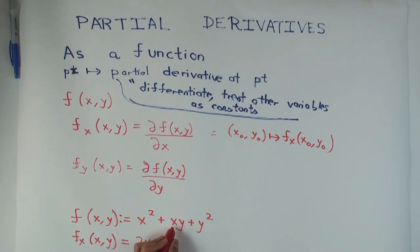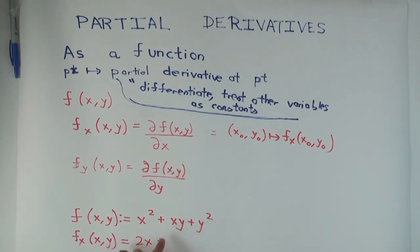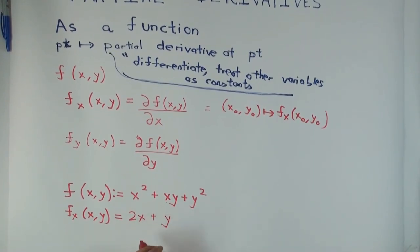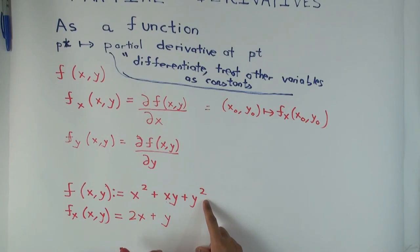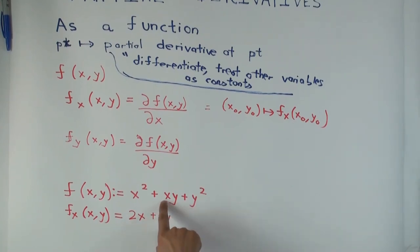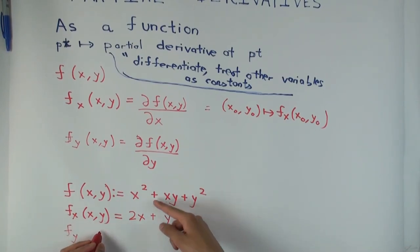Now, the derivative of a product in general requires the product rule — saying the derivative of a product is the product of derivatives would be wrong. But here y is a constant, so you can just pull y out. The derivative of x is 1, so xy gives y. The derivative of y² with respect to x is zero, since y is treated as a constant. So f sub x = 2x + y + 0, which is 2x + y.